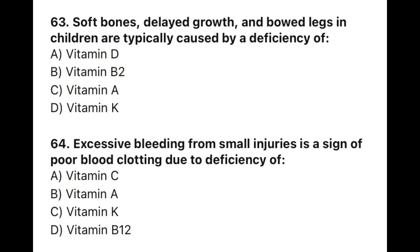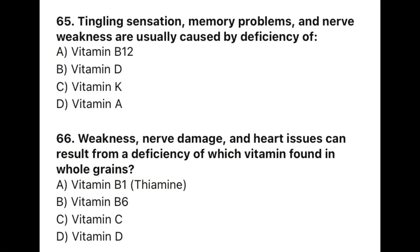Question 63: Soft bones, delayed growth, and bow legs in children are typically caused by deficiency of — the correct option is A — vitamin D. Question 64: Excessive bleeding from small injuries is a sign of poor blood clotting due to deficiency of — the correct option is C — vitamin K. Question 65: Tingling sensation, memory problems, and nerve weakness are usually caused by deficiency of — the correct option is A — vitamin B12. Question 66: Weakness, nerve damage, and heart issues can result from deficiency of the vitamin found in whole grains — the correct option is A — vitamin B1 (thiamine).